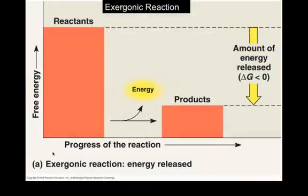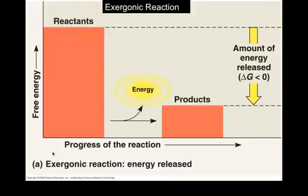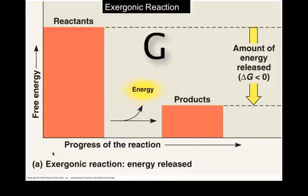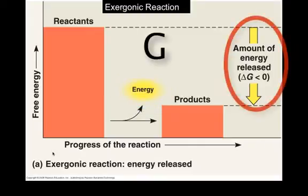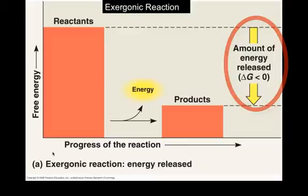For a graphic representation, we can look here. The reactants have more chemical potential energy stored in their bonds. As the reaction progresses, the energy is released and becomes free energy. The symbol for free energy is the letter G, so delta G means the net change in free energy. The products have less energy, and that free energy is then available to do work — the work of the cell.